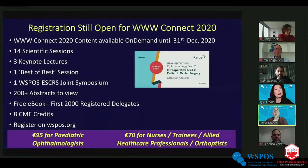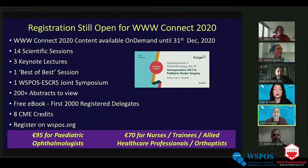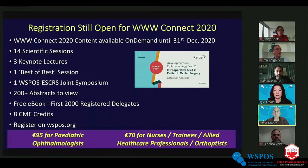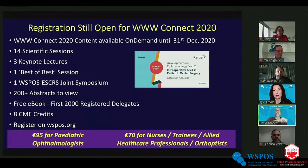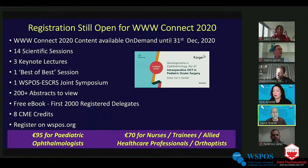You are still able to register for WWConnect, the 24-hour session that took you from around the globe. If you register and join us in the new year, you'll receive a book from Karger — edited by Dr. Ken Initial with authors from around the world — free with your registration. It's 95 euros for pediatric ophthalmologists and 70 euros for trainees, an incredible value covering 18 scientific sessions, three keynote sessions, and a joint session with ESCRS.